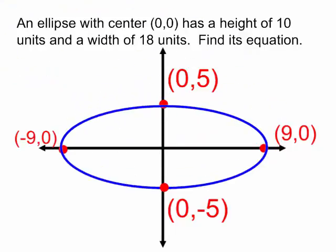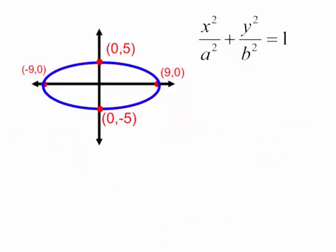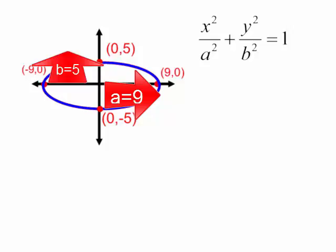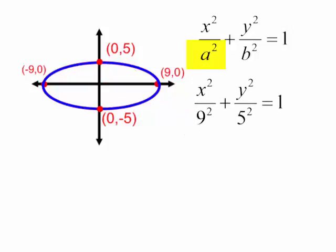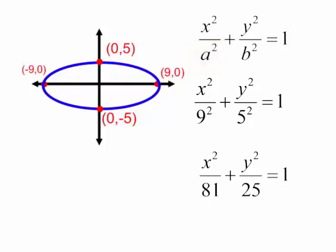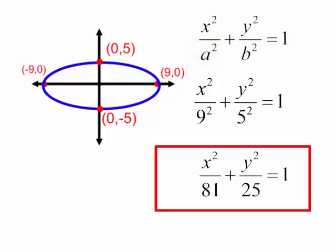This is my ellipse. Now we need to find the equation of this ellipse. We have found a to be 9 and b to be 5. This is a horizontal ellipse, so I will put my largest number under the x squared term. The equation of this ellipse is x squared over 81 plus y squared over 25 equals 1.